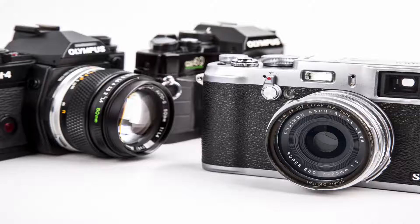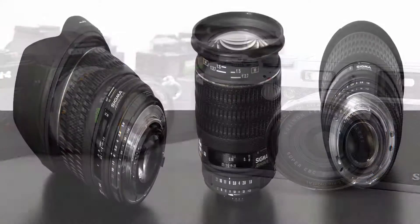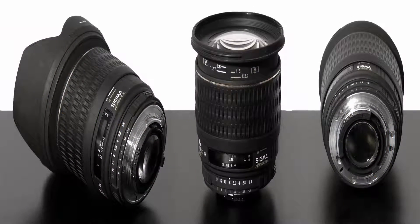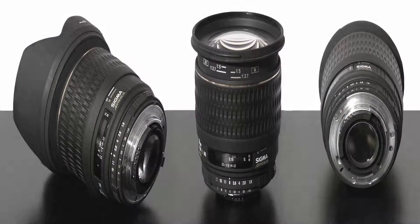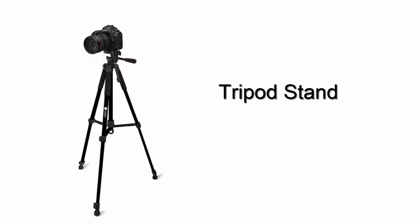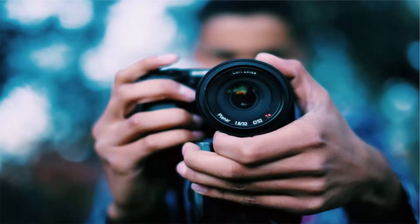Optical Image Stabilization technology was originally used in compact cameras with SLR lenses. With a tripod and camera stand, photographers can take professional shots that are sharp and clear without any blur.